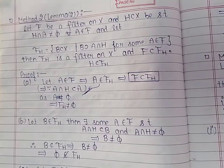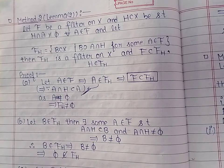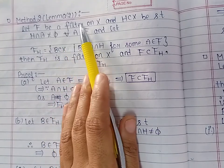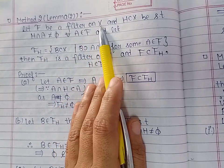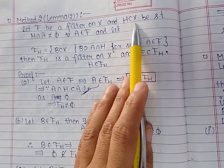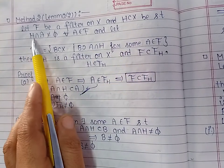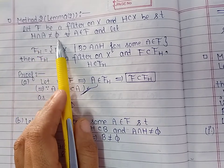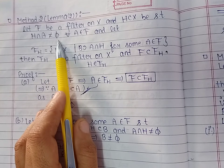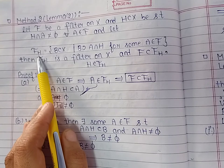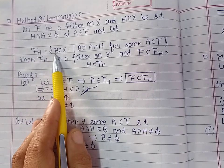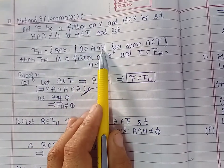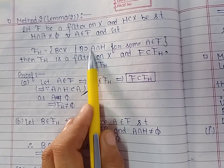Good morning students. Today we will discuss the second method of obtaining filters. Let us take F, a filter on a set X. H is a subset of X such that its intersection with every member of filter F is non-empty. We define a collection F_H as the collection of all those subsets of X which contain the intersection of H with some member of filter F.